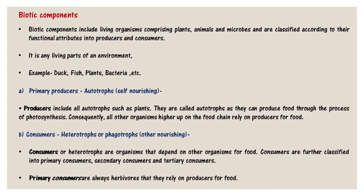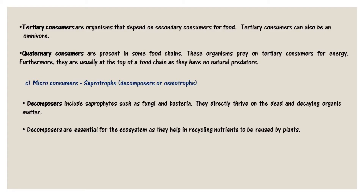Primary producers are basically green plants and certain bacteria and algae; these synthesize carbohydrates from raw materials like carbon dioxide and water in the presence of sunlight. In terrestrial ecosystems, producers are basically herbaceous and woody plants, while in aquatic ecosystems, producers are various species of microscopic algae. Consumers are also known as heterotrophs or phagotrophs — other-nourishing — which means they depend on other organisms for food and are classified into primary, secondary, and tertiary consumers. They are incapable of producing their own food through photosynthesis and depend on organic food derived from plants, animals, or both.